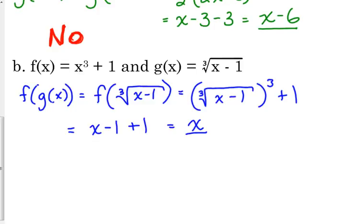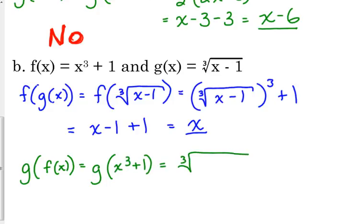You have to do g of f of x as well. Okay, you have to do g of f of x as well. So let's plug f of x, x cubed plus 1, into our g function, which is the cube root of x cubed plus 1, minus 1. Okay. I replace the x with the x cubed plus 1. Now this one simplifies in a different order. What simplifies first here?